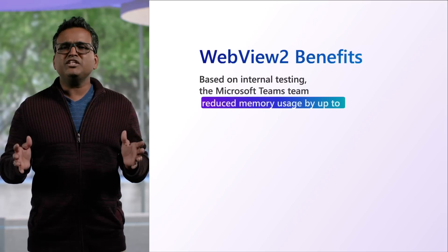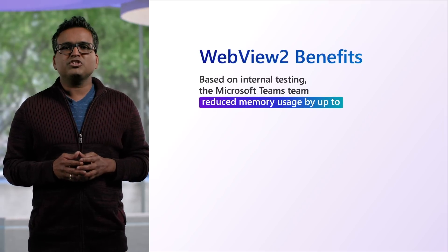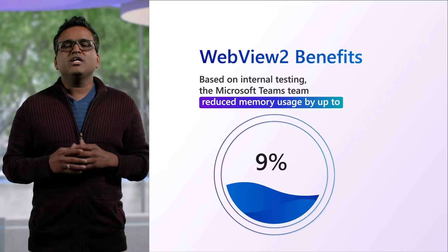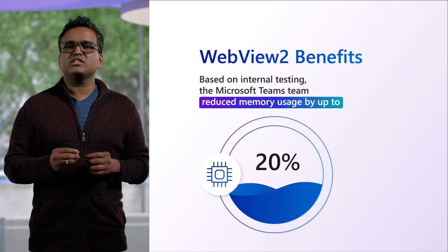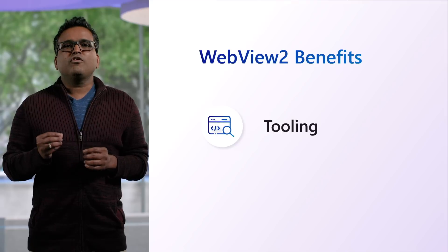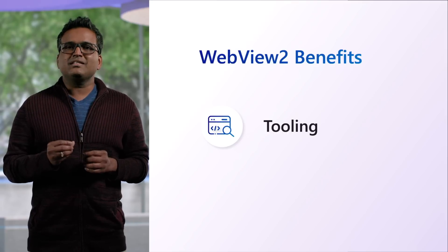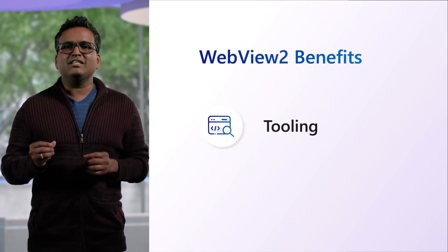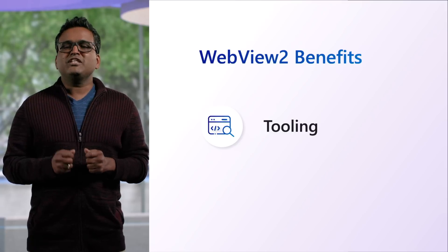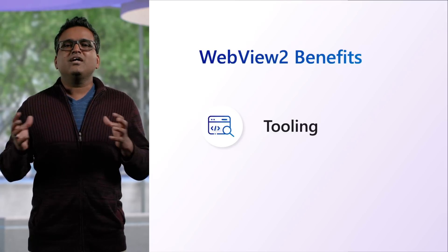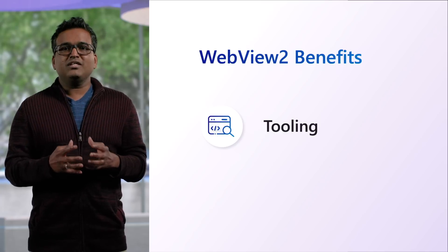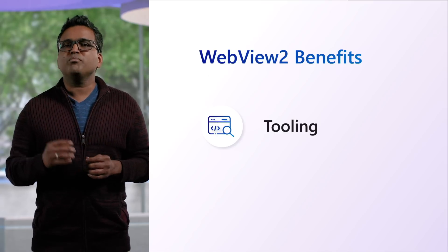With the new architecture, Teams application saw an automatic improvement of 200 megabytes on the working set, as a lot of binaries are being shared with Edge. In addition, WebView 2 APIs like set memory usage target level help Teams reduce memory by up to 20% based on internal research. Debugging in WebView 2 for problems like memory leaks and application hangs has improved greatly with tooling enhancements, including the ability to get JavaScript traces and native traces, accurately representing the heap state in snapshots, and minifying function names in performance profiles.